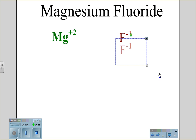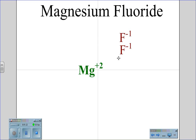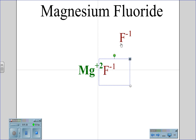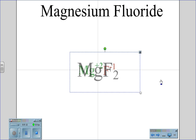Therefore, we need a second fluoride. In doing this, we now have plus two for the magnesium and two negative ones for a negative two charge for the fluoride. So magnesium will join fluoride to create the molecule magnesium fluoride, MgF2.